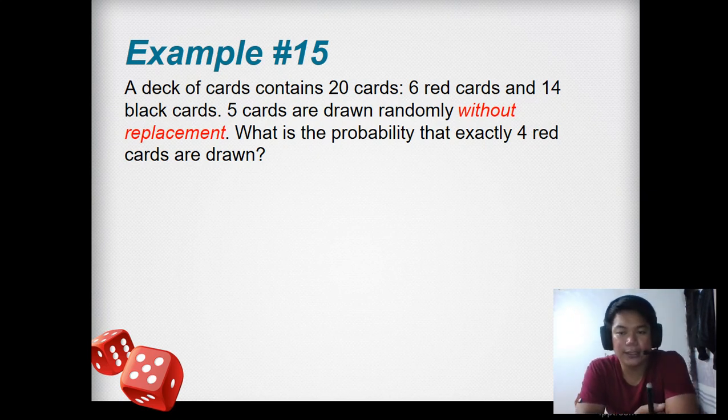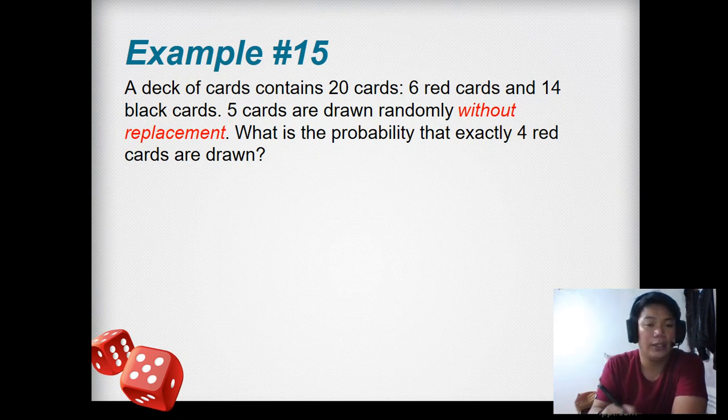A deck of cards contains 20 cards. This is not the normal deck of cards - it has only 4 kingdoms. There are 6 red cards and 14 black cards. 5 cards are drawn randomly without replacement. What is the probability that exactly 4 red cards are drawn?